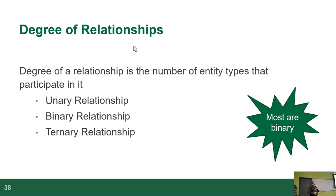A binary relationship — which is 98% of database tables out there — is when there are two entities participating, like professor and student. A ternary relationship is when there are three. After ternary they stop giving names, because there are cases with four, five, or six entities all participating as a single thing. For example, a developer, an architect, and a project — the relationship between those three would be ternary.